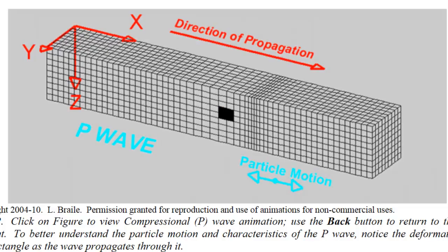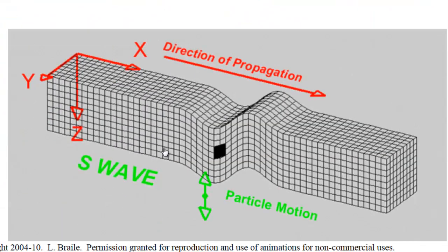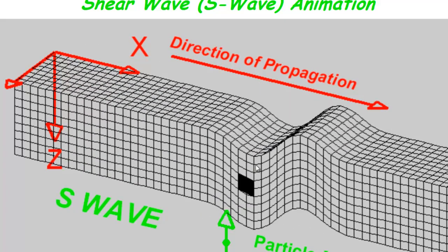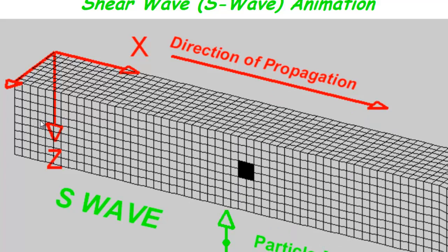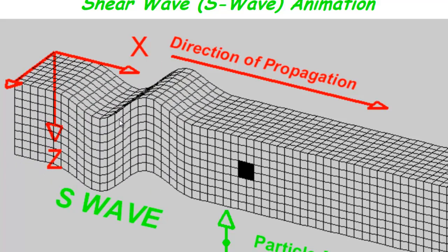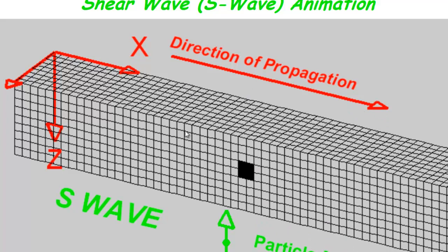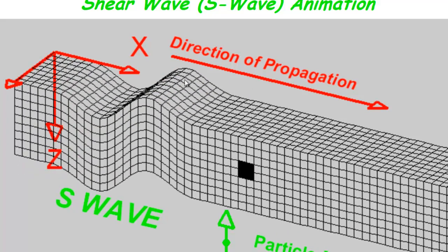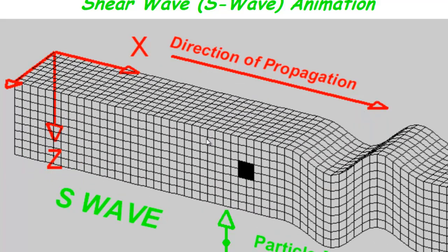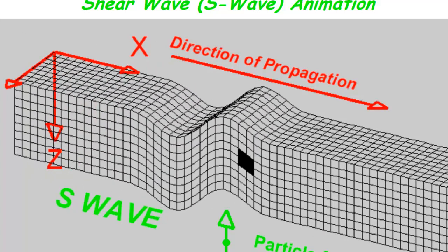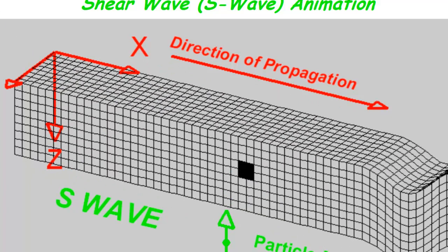Let's look at the animation of an S wave — it's a little different. You can kind of guess that the S wave travels like a jump rope, going up and down along the Z axis. It can also travel along the Y axis, moving side to side. It's called an S wave, a secondary wave, or a shear wave. Again, it's important to remember that this is going through the Earth.